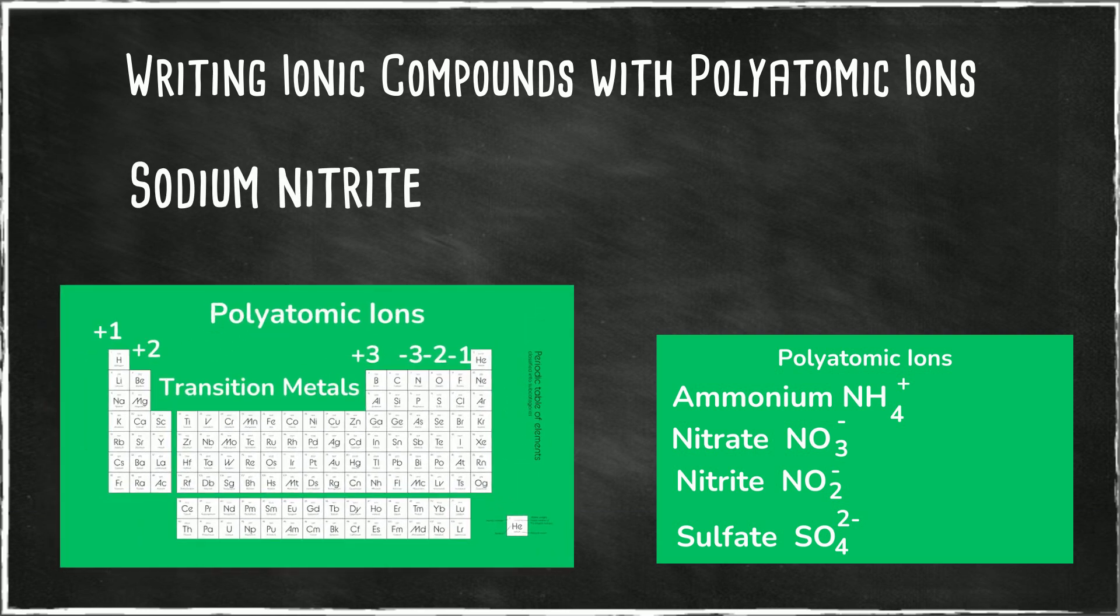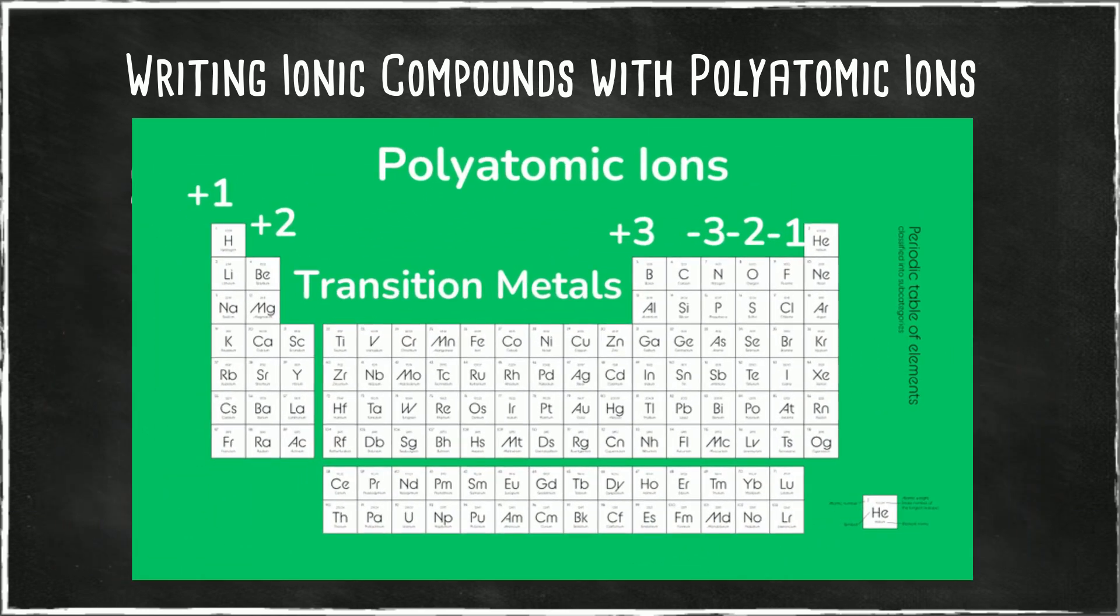Let's look at the periodic table. If you notice, group 1a will have a plus 1 charge. Group 2a will have a plus 2 charge. Transition metals, there's no set pattern, so we're going to skip over them for this video. Group 3a has a plus 3 charge.